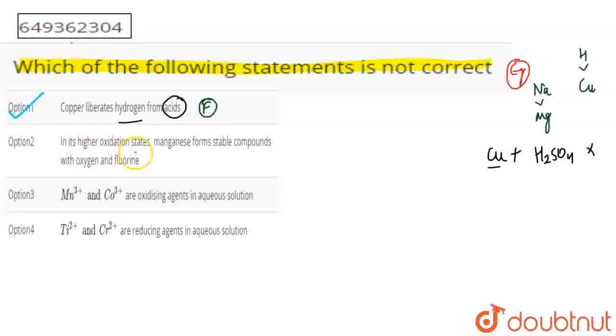Next, in its higher oxidation states, manganese forms stable compounds with oxygen and fluorine. We will control the higher oxidation states of manganese with oxygen and fluorine.